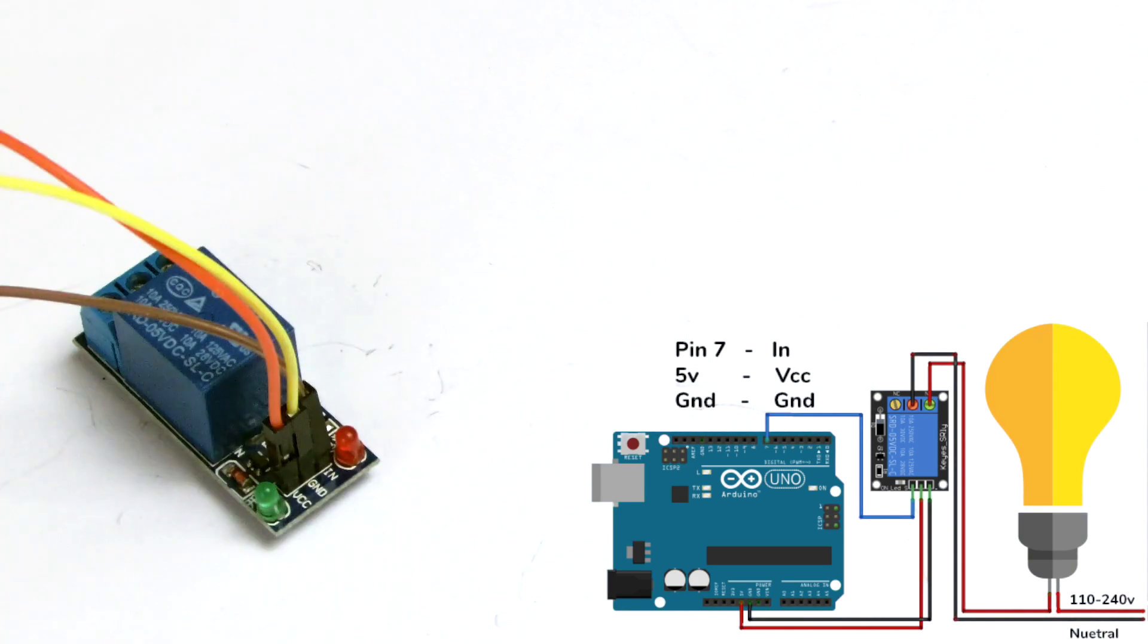Now, just to do a quick recap, we've connected three jumper cables from the Arduino Nano to this relay breakout board. Orange is VCC to 5V on the Arduino Nano, yellow is ground to the ground pin on the Arduino Nano.